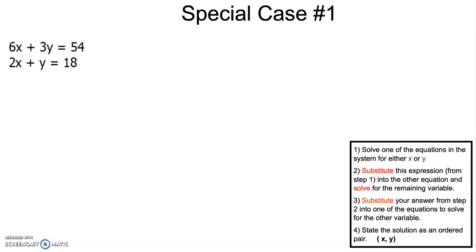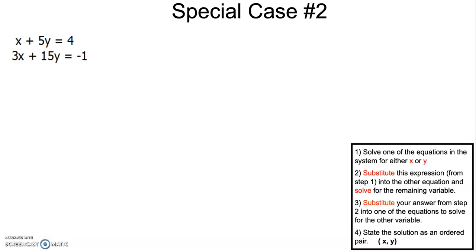The last two problems are special cases, and we're going to do these together in class. The first special case has the system 6x plus 3y equals 54 and 2x plus y equals 18. The second special case has x plus 5y equals 4 and 3x plus 15y equals negative 1. Make sure to have all of the examples written down, do or at least attempt the on-your-own problems, and be prepared to ask questions in class.